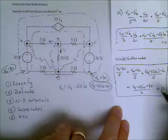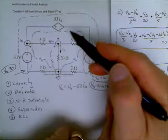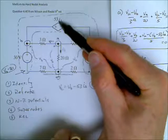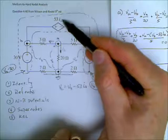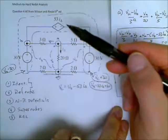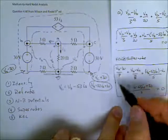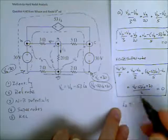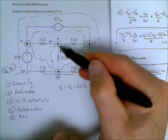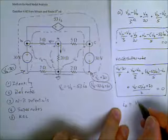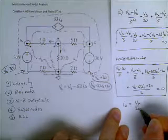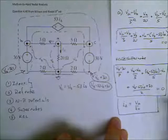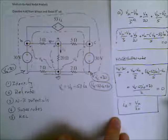The final equation comes from every time we have a dependent source, there is a dependent variable. We need to write that dependent variable in terms of the node-to-reference potentials. And so we write that I delta is equal to, this is the current here, VA over 20. And there is the third equation in our third unknown. We should be able to solve that.